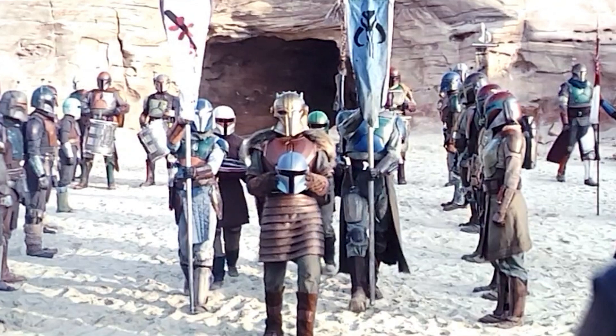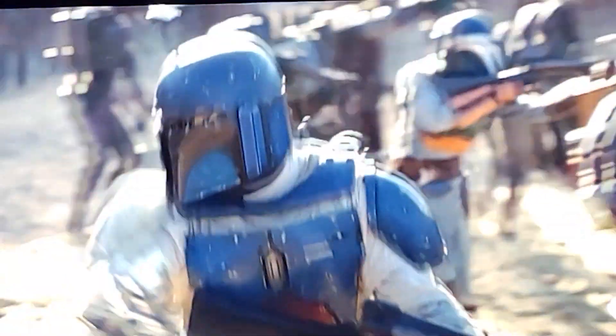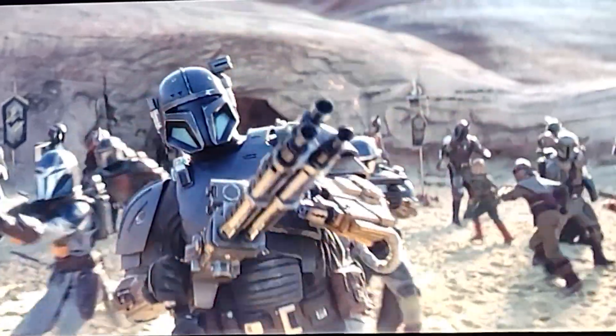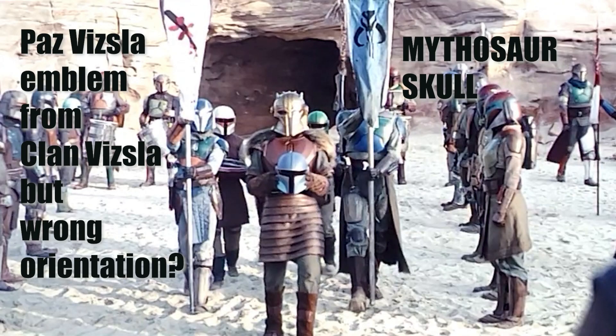I just want to note that in the fight scene, suddenly all the banners seem to have vanished except for the ones stuck in the sand — so that's the magic of movies. The two main banners in this scene are the mythosaur skull on the blue one on the right, which represents all of the Mandalorians, and on the left it's the Paz Vizsla emblem — the father of the child being brought into the full Mandalorian group — which is the symbol from Clan Vizsla.